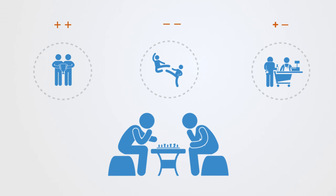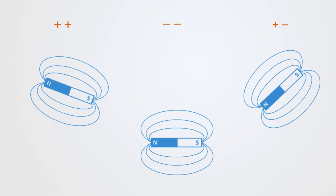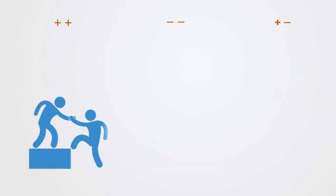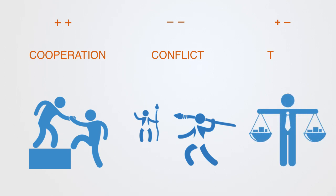These different types of interdependencies create attractors towards fundamentally different types of interaction between agents: that of cooperation, derived from positive interdependency; that of competition or conflict, as derived from negative interdependencies; or that of trade, from interactions of exchange.